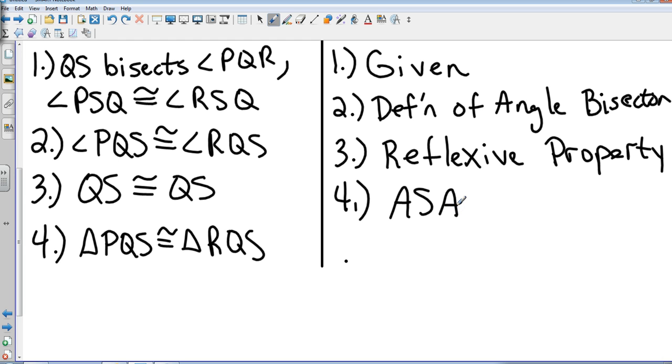So four-step proof. Again, Angle Angle Side will be the same, just given different properties of your triangles. And so now that's Angle Side Angle and Angle Angle Side.